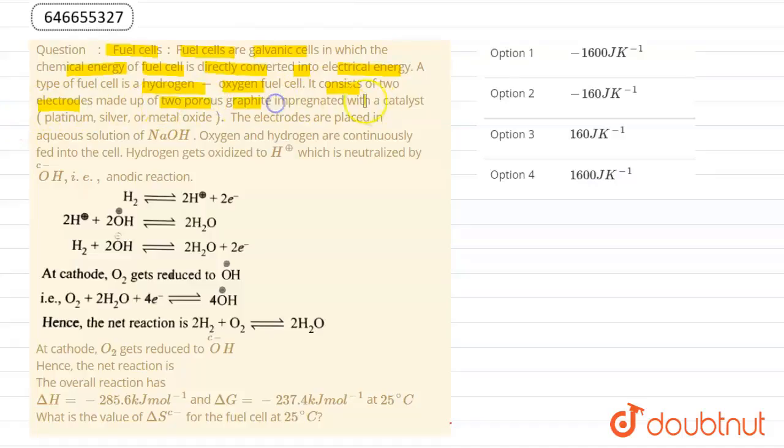It consists of two electrodes made of porous graphite impregnated with a catalyst, platinum, silver, or metal oxide. The electrodes are placed in aqueous solution of NaOH. Oxygen and hydrogen are continuously fed into the cell.